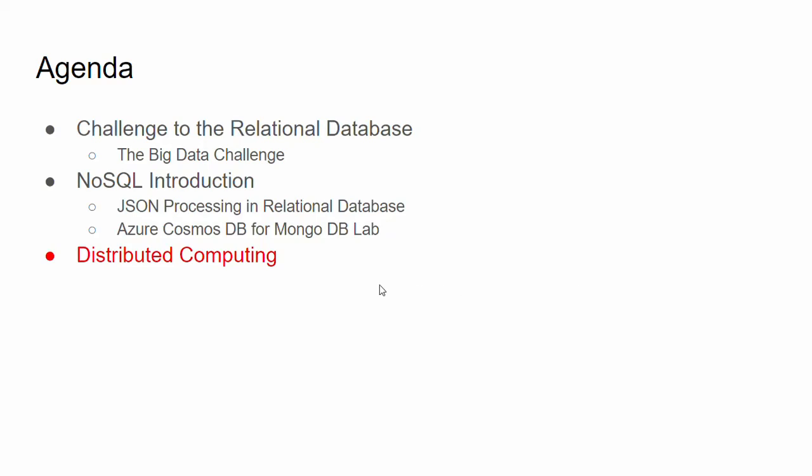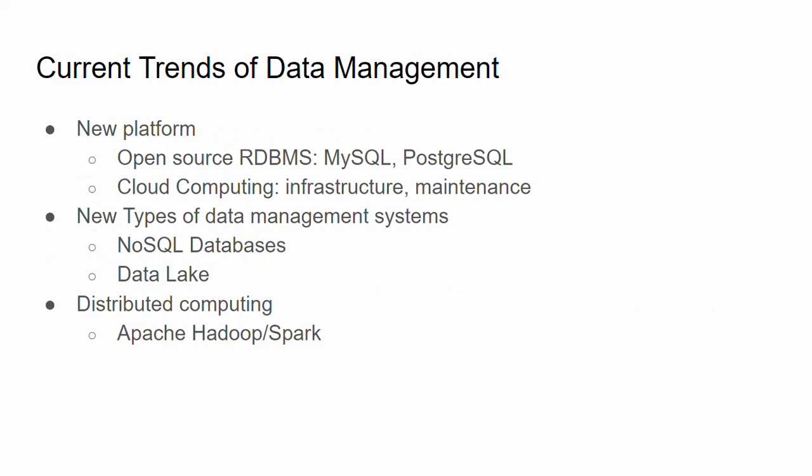Finally, let's talk about distributed computing. Let's review what we discussed about current trends of data management. The first is the new platform with open source RDBMS and cloud computing infrastructure. The second one we just discussed is the NoSQL database, and we will talk about that in future sessions. Now let's come to talk about distributed computing, which in this context is about Apache Hadoop and Spark.